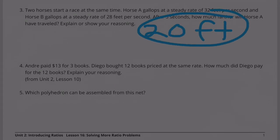Number 4: Andre paid $13 for 3 books. Diego bought 12 books priced at the same rate. How much did Diego pay for the 12 books? Explain your reasoning.